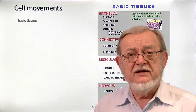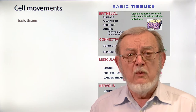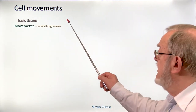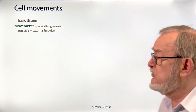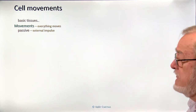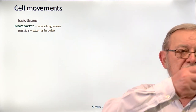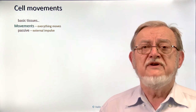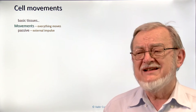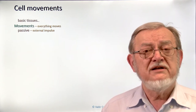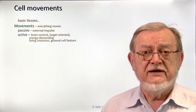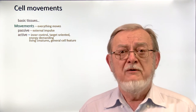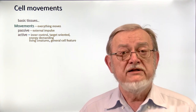Practically every cell in our body can move somehow, so to understand what makes muscular tissues distinct from others, I'd like to talk about movement in general. The movement can be divided into two types. We have passive movements which require an external impulse — a moving object hits another one and this other one will move away. This passive movement doesn't require any initiative, the target cannot decide direction or speed, and it doesn't require an internal energy source. In contrast, active movement requires an internal control.